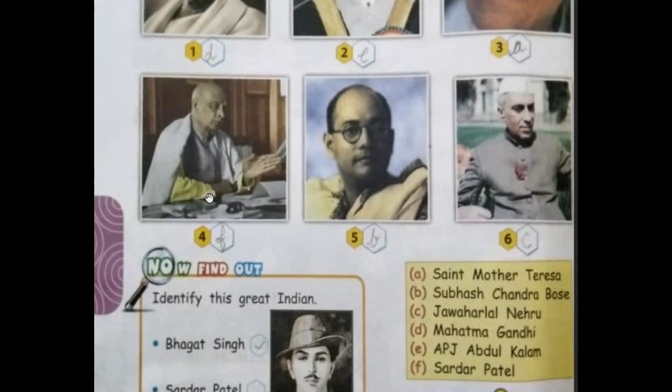The fourth one is Sardar Vallabhbhai Patel, popularly known as Sardar Patel. He served as the first Deputy Prime Minister of India, so we will write F here. The fifth one is Subhash Chandra Bose. He was born on 23rd January 1897.